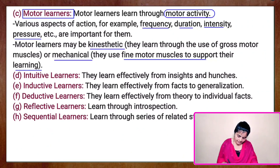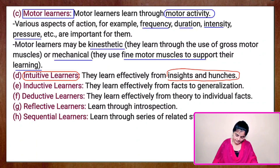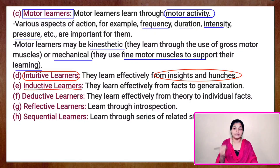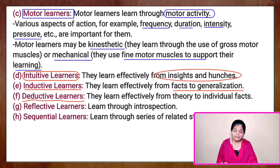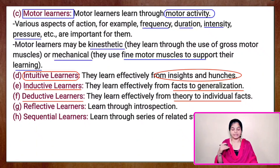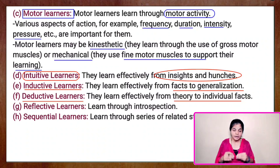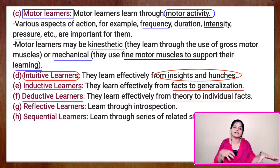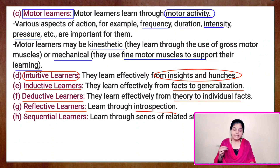The next type of learners is intuitive learners, who learn effectively from insights and hunches. Inductive learners learn effectively from facts to generalization. Then we have deductive learners, who learn effectively from theory to individual fact. The difference is that inductive learners learn the facts and then generalize those ideas, whereas deductive learners study theory first and then convert them into facts — going from general to individual rule. Next, we have reflective learners, who learn through introspection, and sequential learners, who learn through a series of related steps.